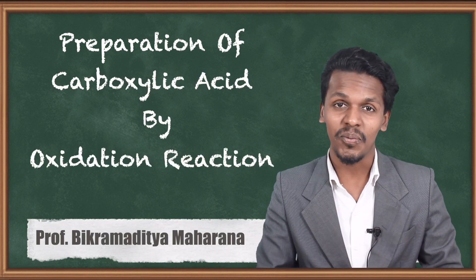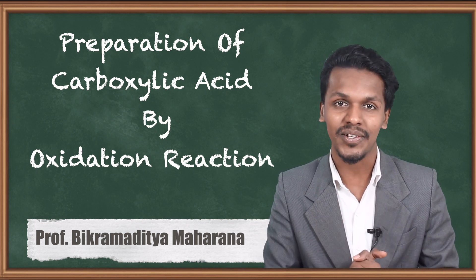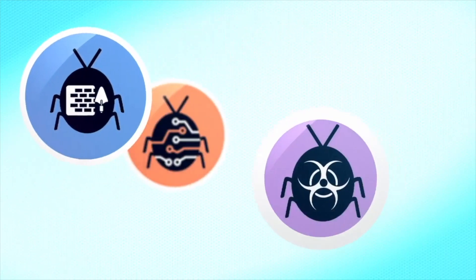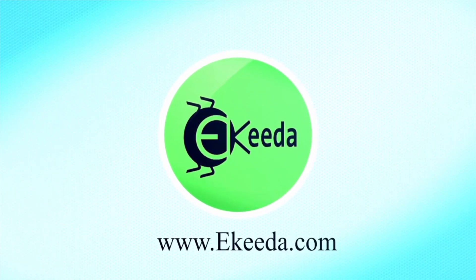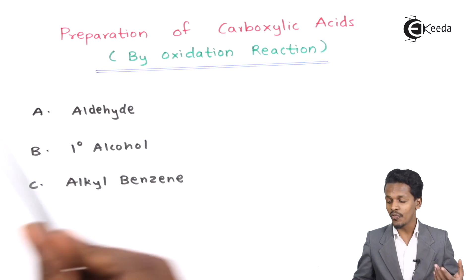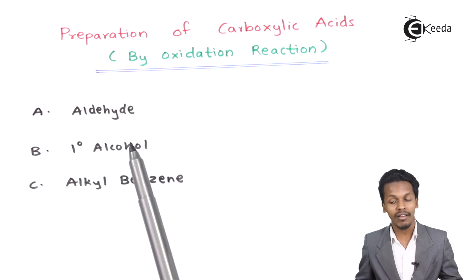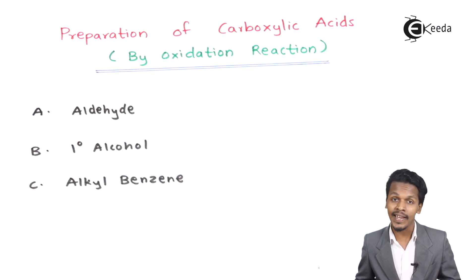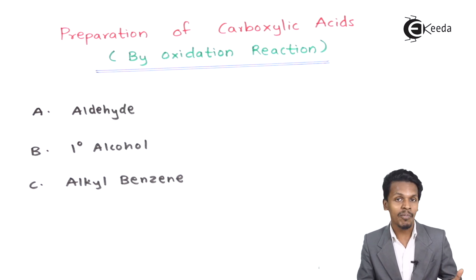In the previous lecture we discussed how we can prepare carboxylic acid. Based on that, we are going to talk about how we can prepare carboxylic acid by oxidation reaction. In this topic we will discuss oxidation reactions on three reactants: aldehyde, primary alcohol, or alkyl benzene, through which we can prepare both aromatic and aliphatic carboxylic acids.